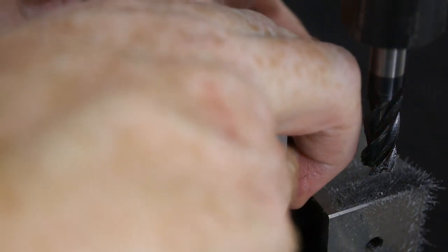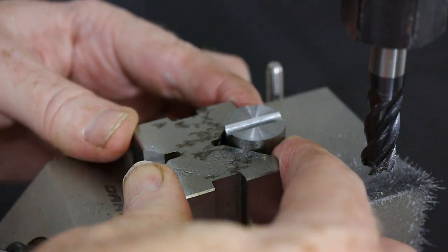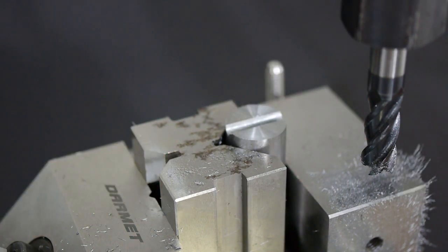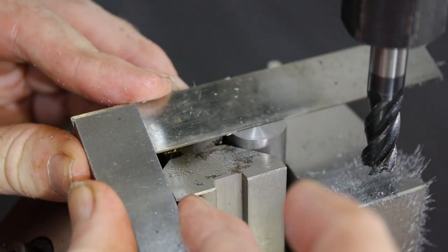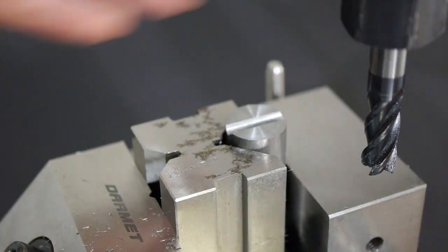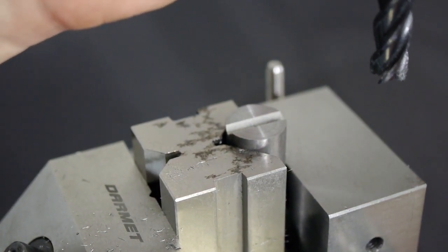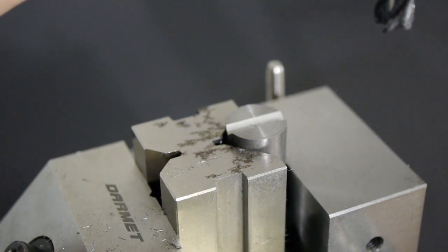A part so narrow and flexible probably won't be stable supported only from below, so I decided to also clamp it in place from above. To hold the clamps I drilled and tapped two holes on either side of the groove. Instead of laying out the position of the holes with layout fluid or a centre punch, I squared set the groove up with the table and used the X axis scale to set out the positions.